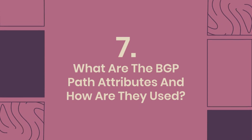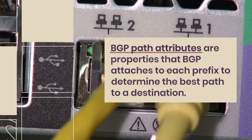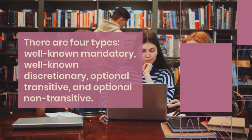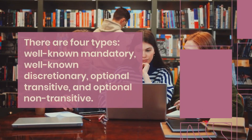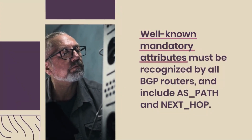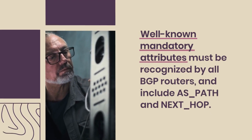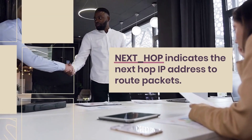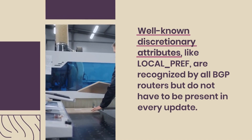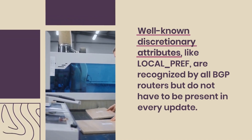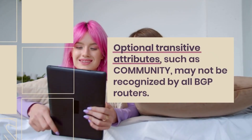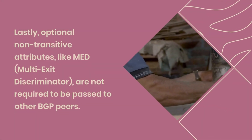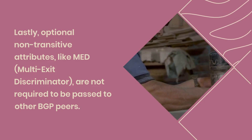What are the BGP path attributes and how are they used? BGP path attributes are properties attached to each prefix to determine the best path to a destination, providing a flexible and granular way to control traffic flow. There are four types: well-known mandatory, well-known discretionary, optional transitive, and optional non-transitive. Well-known mandatory attributes include AS_path and NEXT_HOP. Well-known discretionary attributes like LOCAL_PREF are recognized by all BGP routers but don't have to be present in every update. Optional transitive attributes such as community may not be recognized by all routers — if unrecognized, the path is marked but not deleted. Optional non-transitive attributes like MED (multi-exit discriminator) are not required to be passed to other BGP peers.